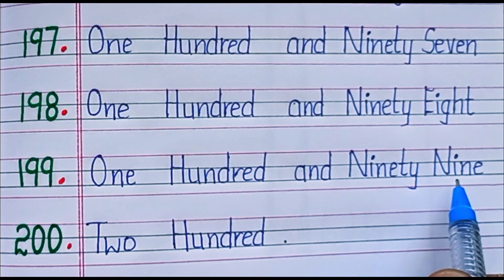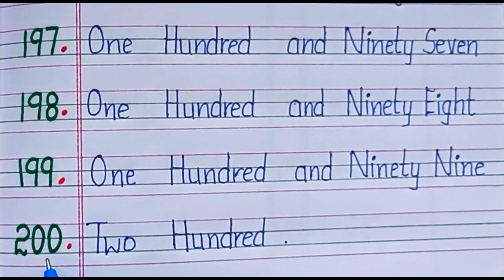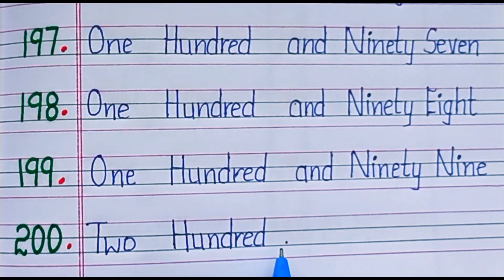200. T-W-O, two, H-U-N-D-R-E-D, hundred. 200: Two Hundred.